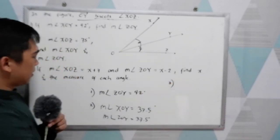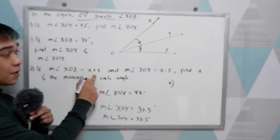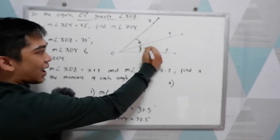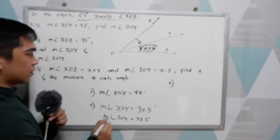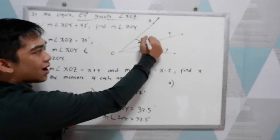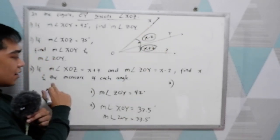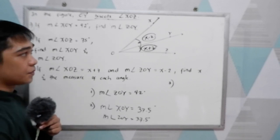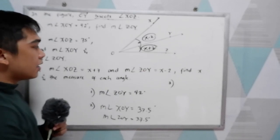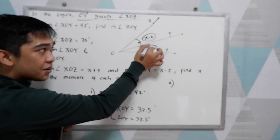Now, number three. If measure angle XOZ equals X plus 7, and angle XOY is X minus 2, find X and the measure of each angle. So we're going to find X first, then the measure of each angle. Since the two angles are given,